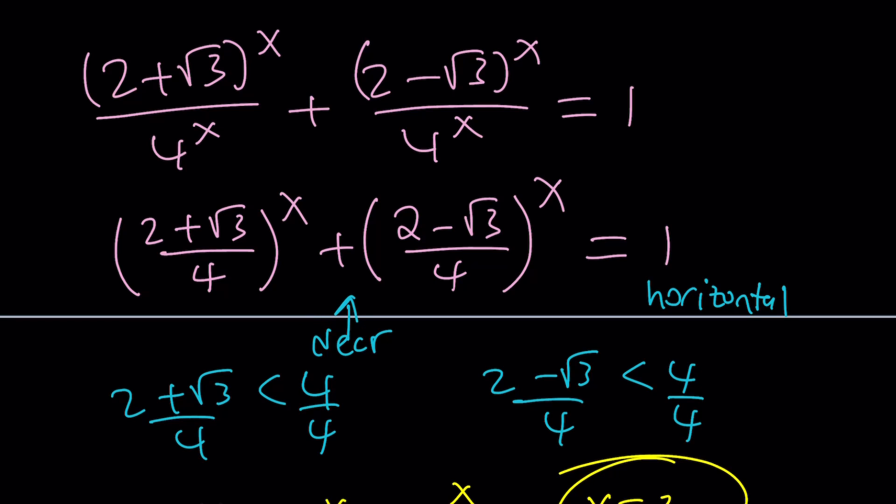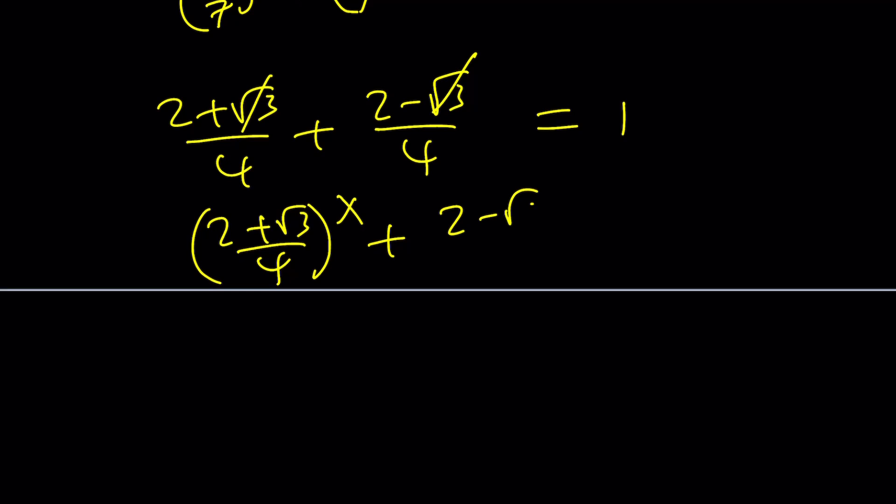First of all, we're going to notice that if x equals 1, we're going to get the following: $\frac{2+\sqrt{3}}{4} + \frac{2-\sqrt{3}}{4}$ is actually equal to 1. Great.